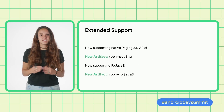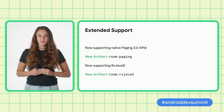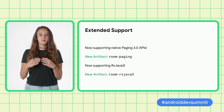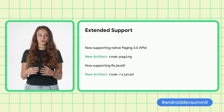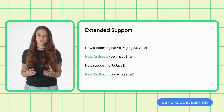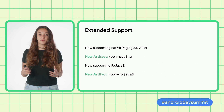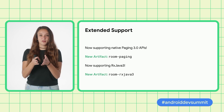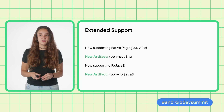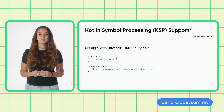We have also extended some of our API support. Room now supports native Paging 3.0 APIs and removes the previous workaround — important to note that you will now need to depend on a new artifact called Room Paging. We've also added support for RxJava 3, and note that you will now need to depend on a new artifact, Room RxJava 3. Last stop: Kotlin Symbol Processing, or KSP for short.